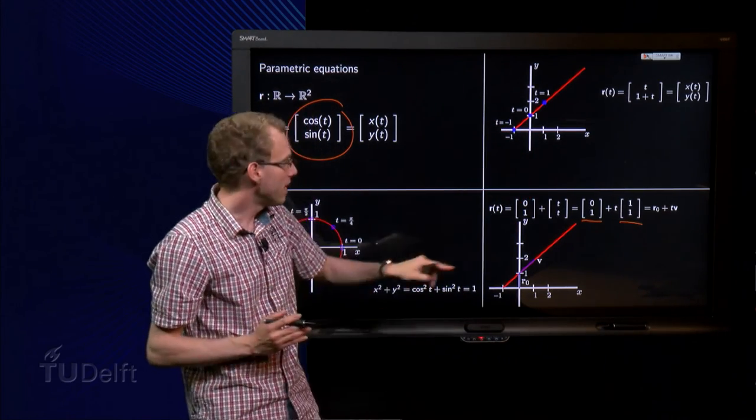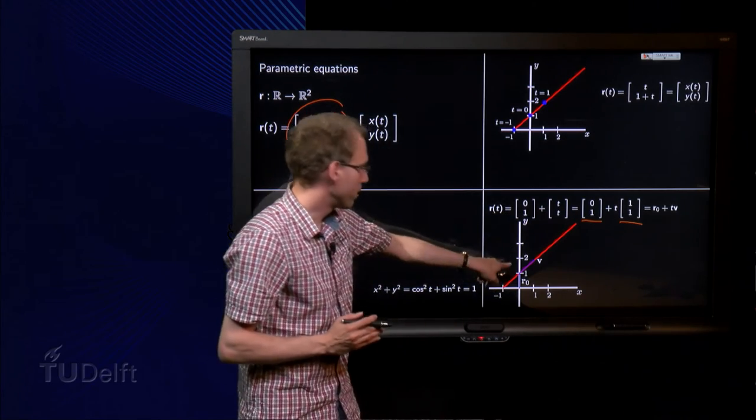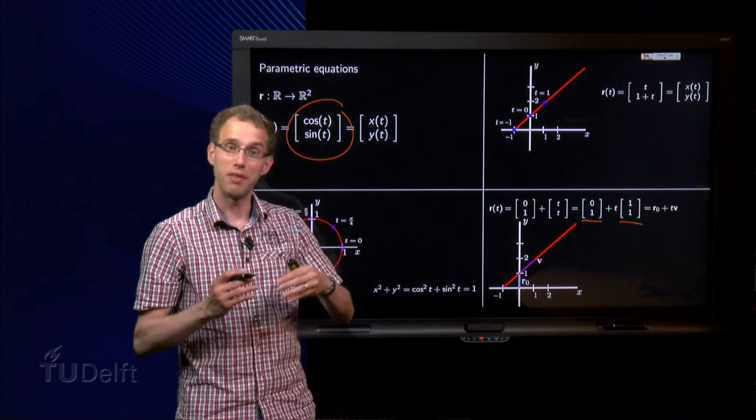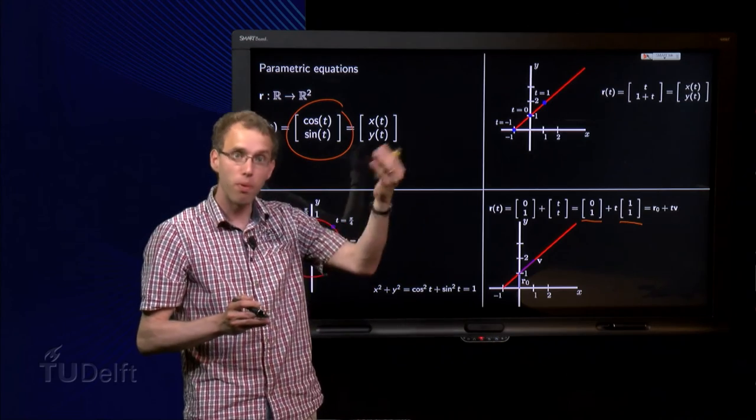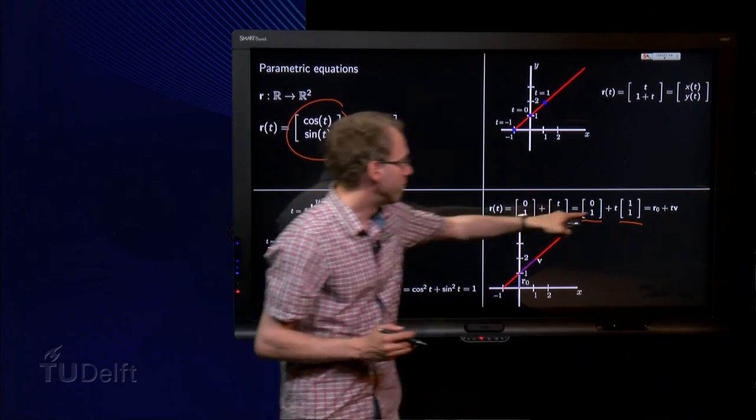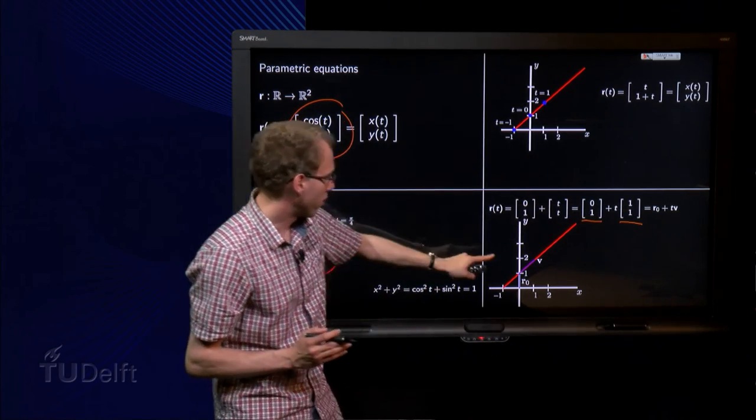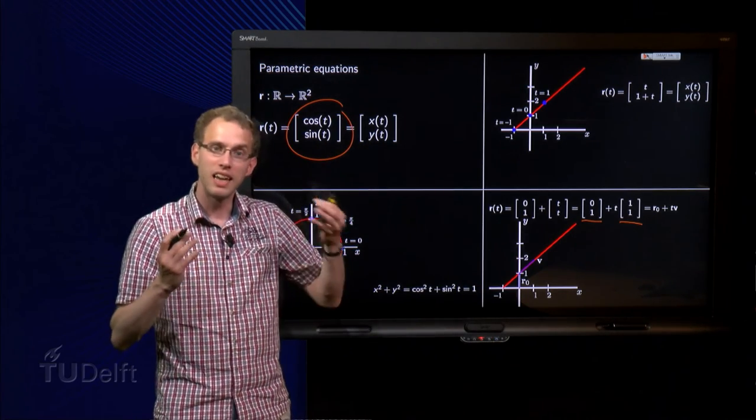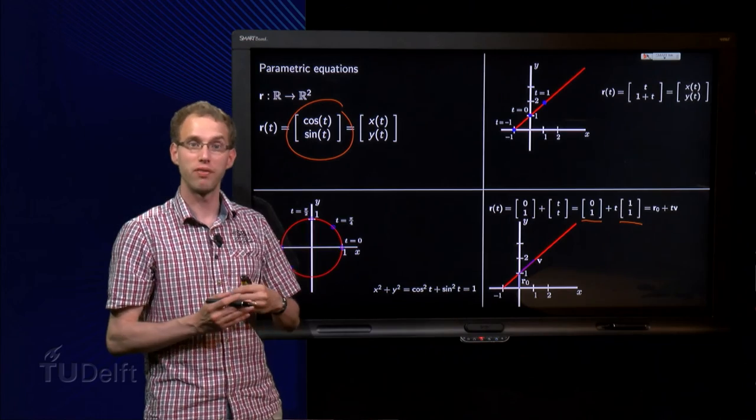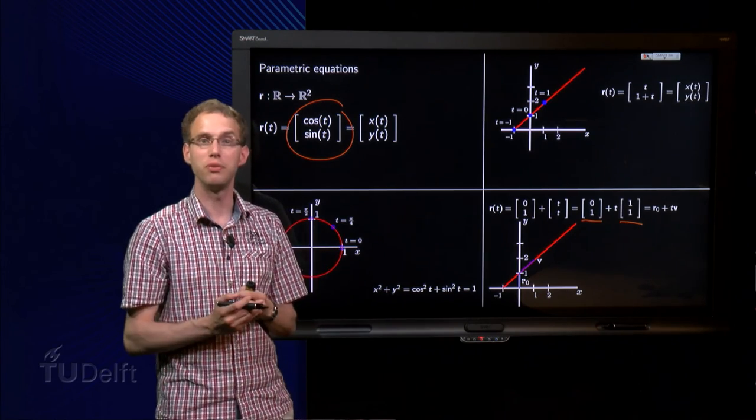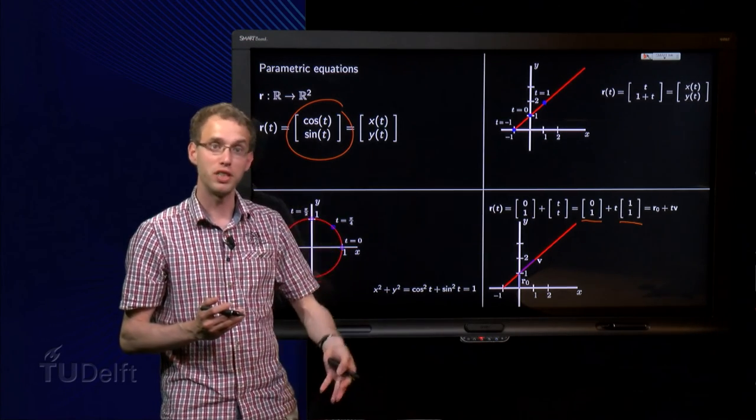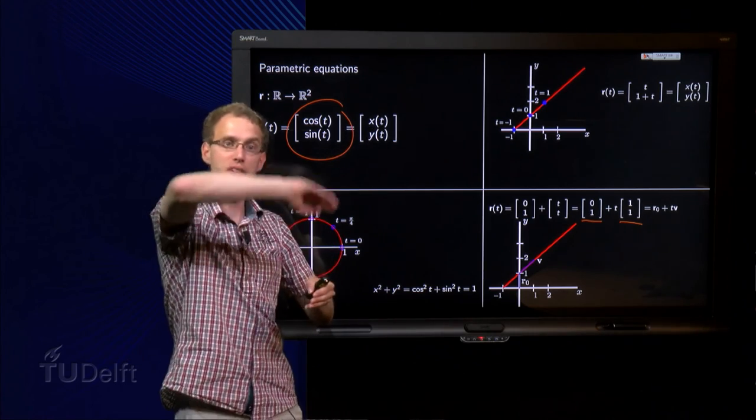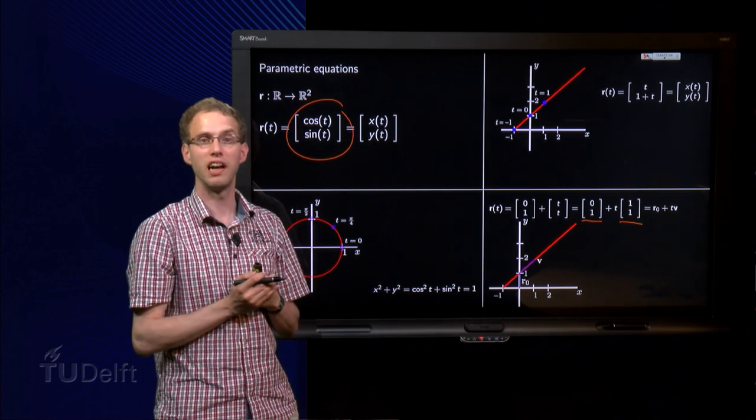And what do they mean? Well, r₀ over here, (0,1) in the picture, is in fact a vector from the origin to a point on the line. And v is the direction vector over here, is a vector in the direction of the line. So you can write any line as a parametric equation of the form r₀ plus t times v, where r₀ is from the origin to any point on the line, and v is in the direction of the line.